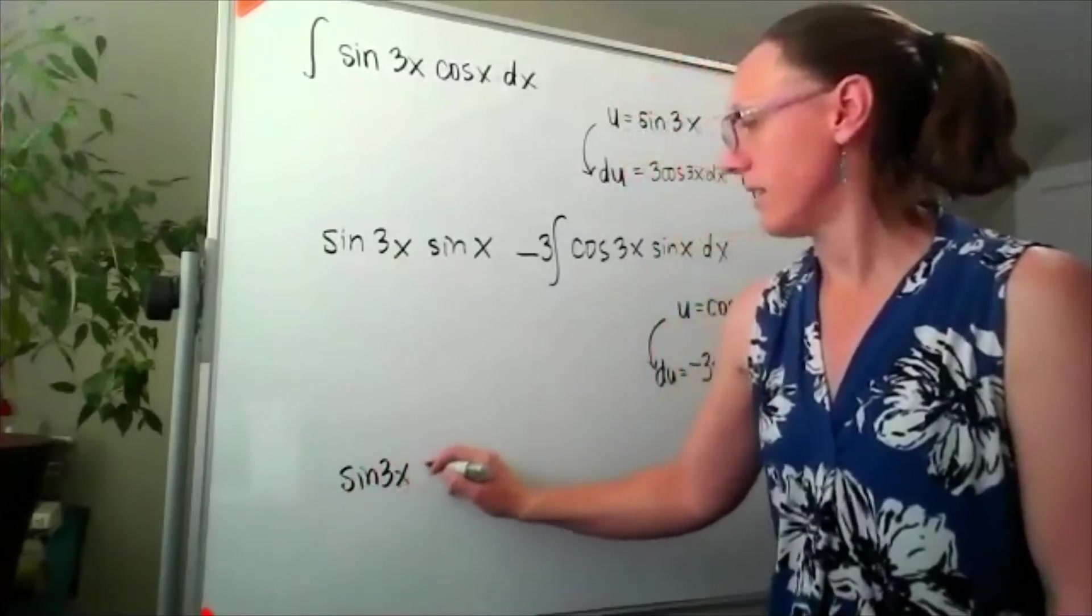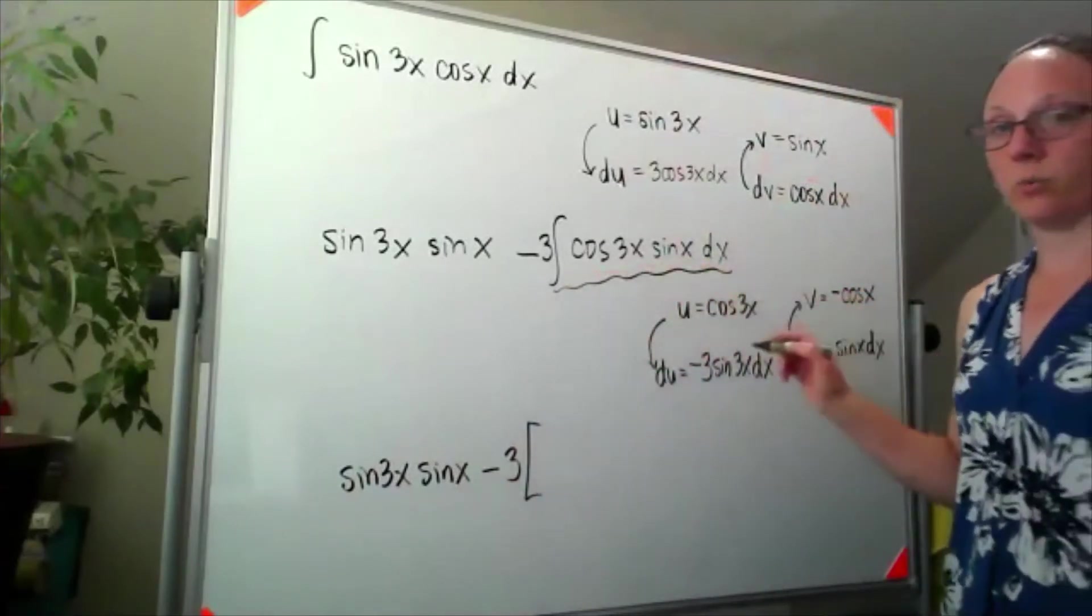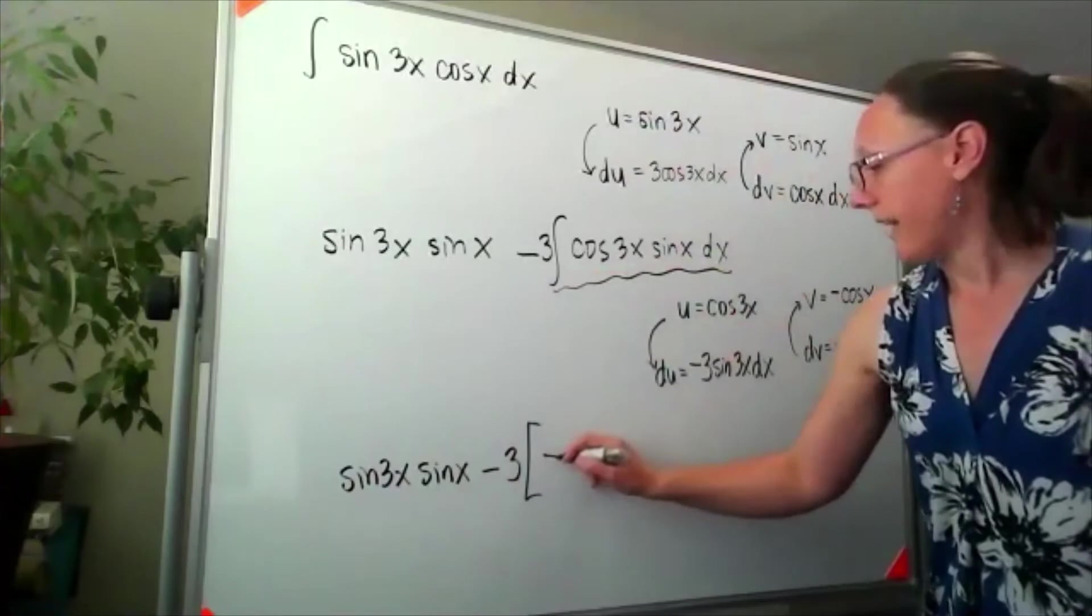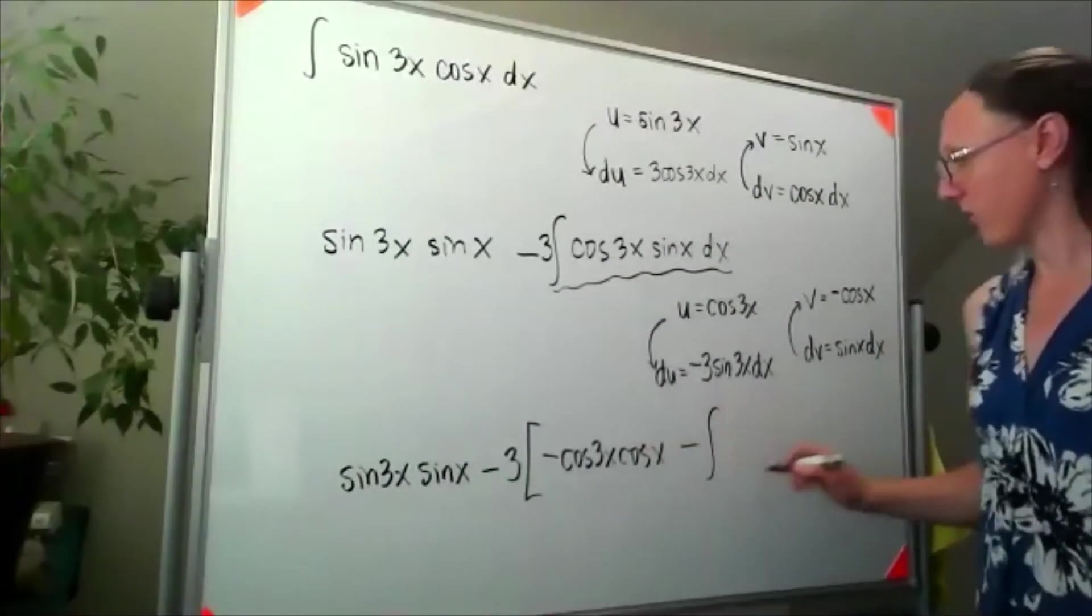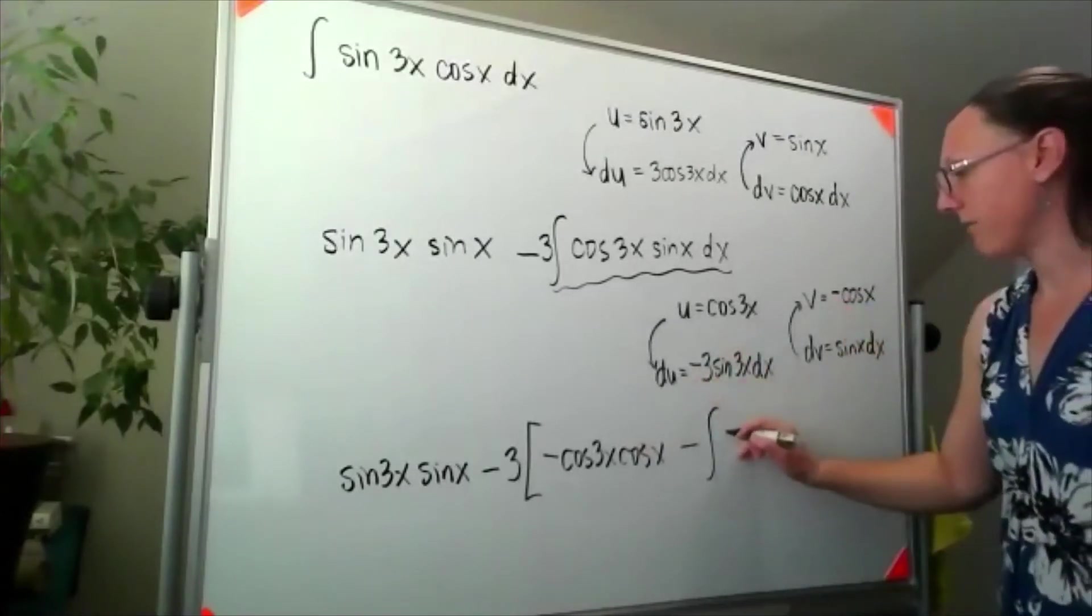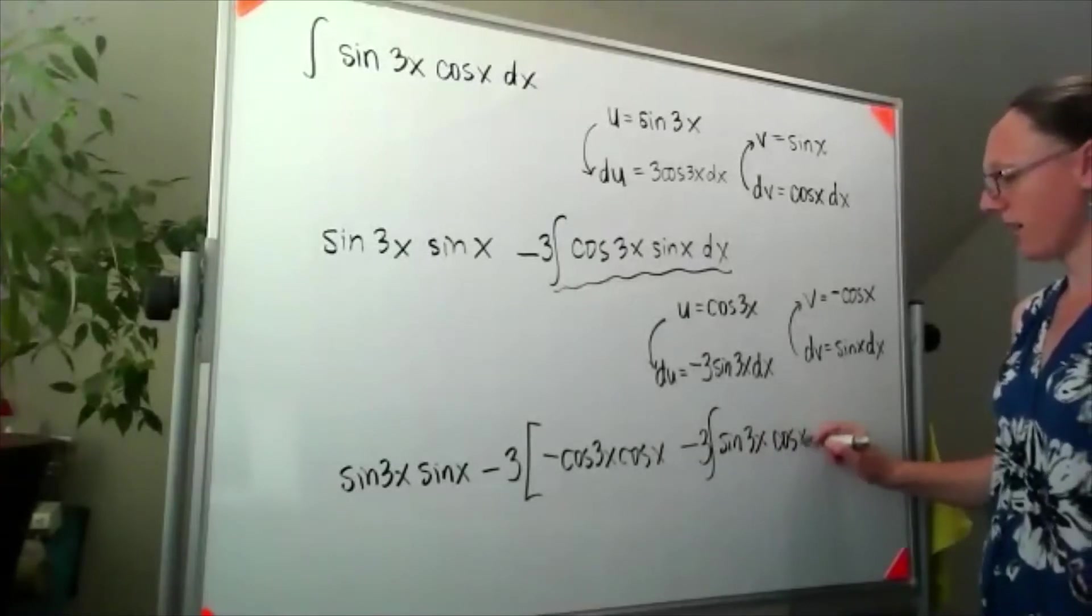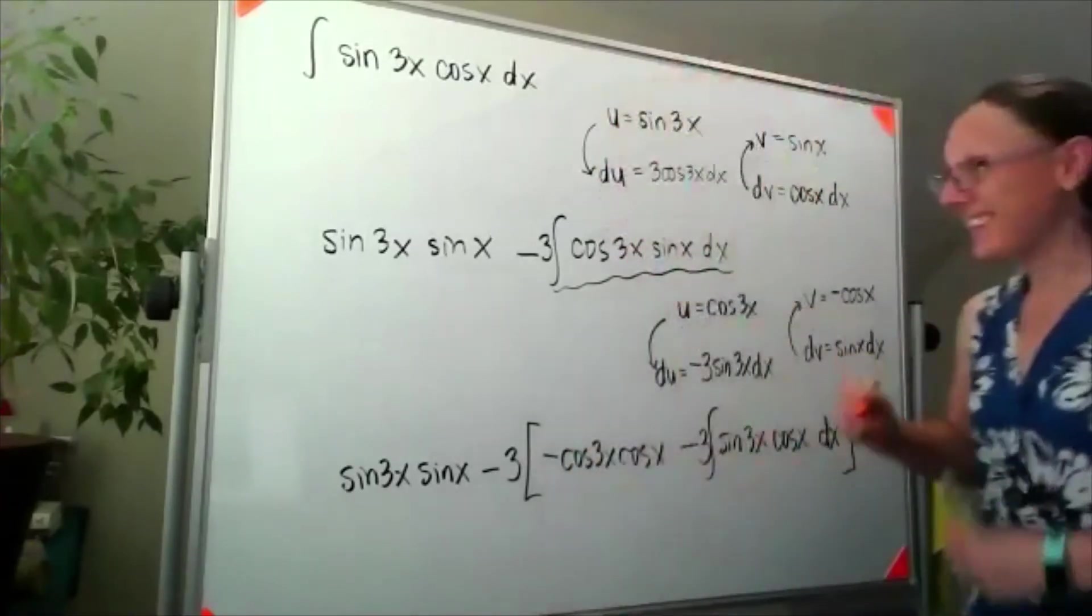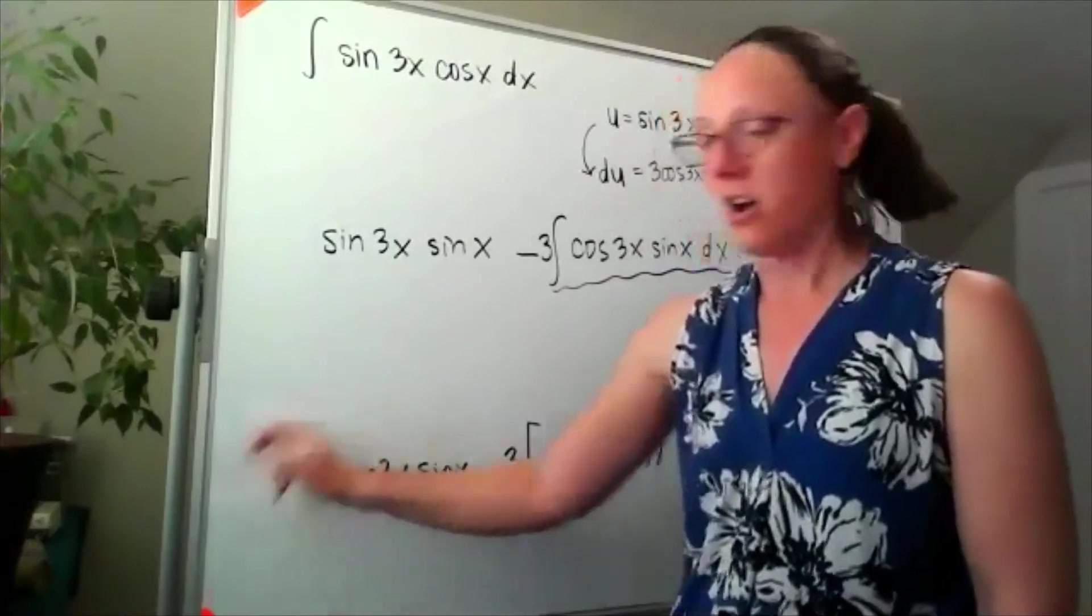So I've got my sine of 3x times sine of x minus 3, and then we're replacing this integral with u times v minus the integral of v du. So u times v - I'll have cosine 3x times negative cosine of x - minus the integral of v du. Well, that minus and that minus are going to cancel out, so I'll have 3 sine 3x cosine x dx. And now is the part where we look at this and say, this is what we were trying to find in the first place - it's actually secretly what's sitting over here on the left-hand side of the integral.